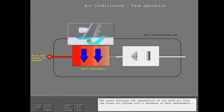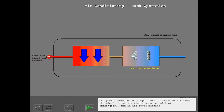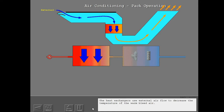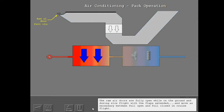The packs decrease the temperature of the warm air from the bleed air system with a sequence of heat exchangers and an air cycle machine. The heat exchangers use external airflow to decrease the temperature of the warm bleed air. The ram air doors control the flow of external air to the heat exchangers. The ram air doors are fully open while on the ground and during slow flight with the flaps extended, and move as necessary between full open and full closed in cruise flight.